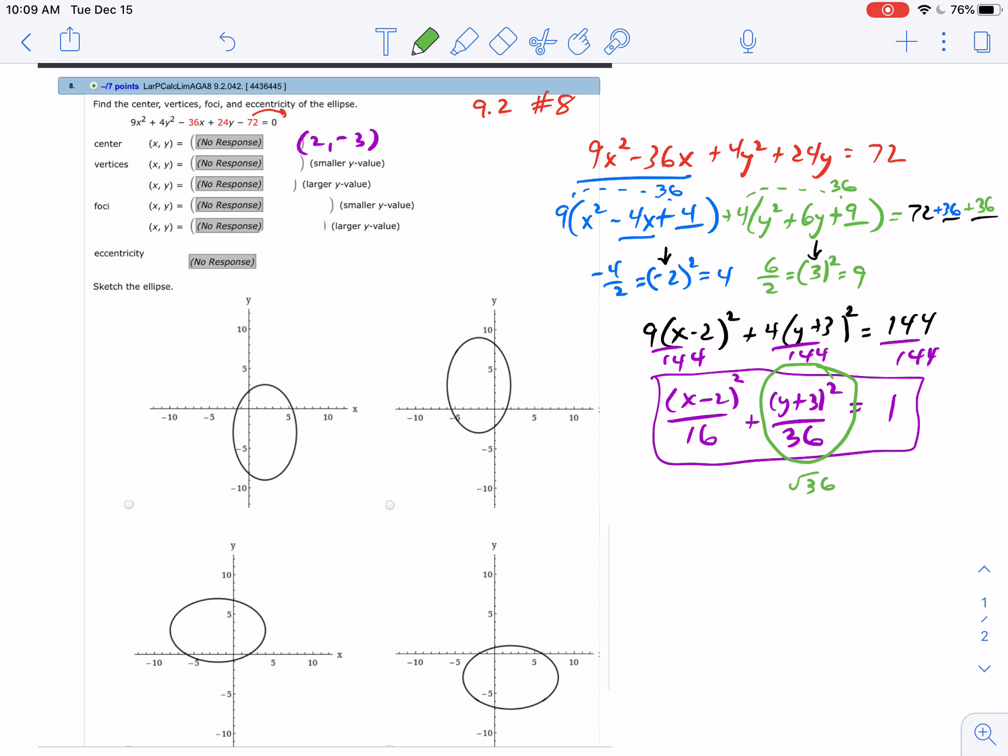That means I'm going to go up and down 6 from my center. So if my center is at (2, −3), and I go up 6 and down 6...